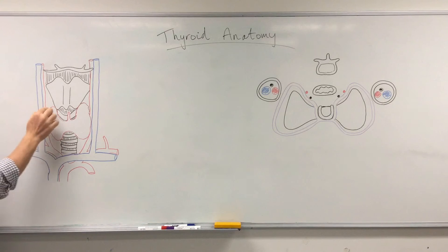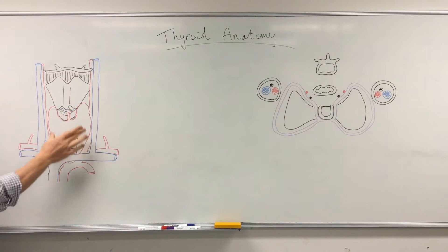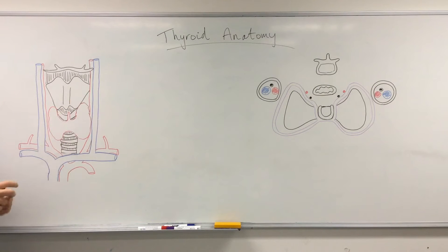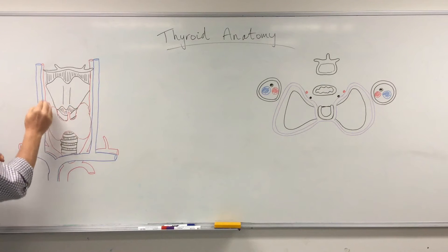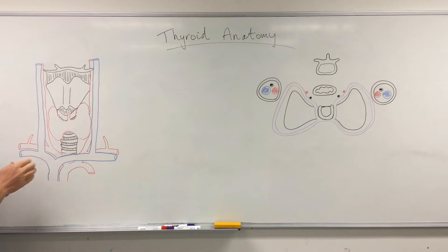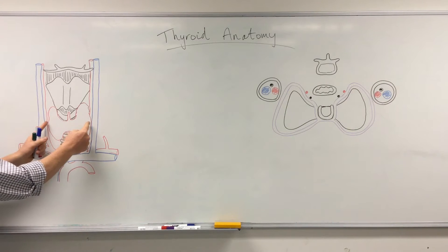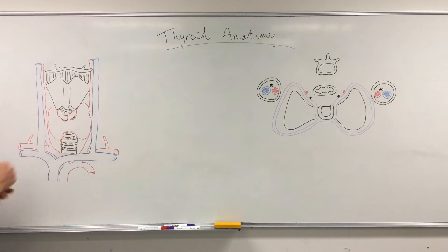The thyroid has a superior pole and an inferior pole, connected in the midline by the isthmus. Superiorly it reaches approximately the inferior border of the thyroid cartilage, at about the level of C5. It extends inferiorly to approximately T1, or about the fourth tracheal ring, giving it a height of about five centimeters. Its longest width including the isthmus is about three centimeters, and it is about two centimeters deep.